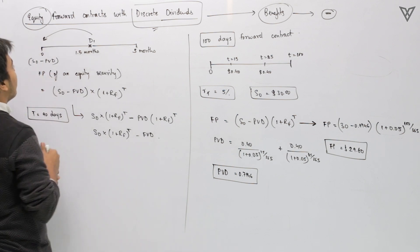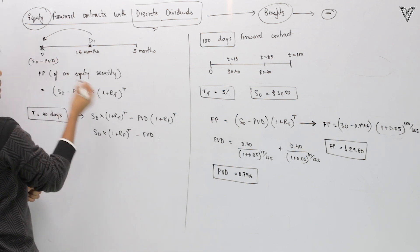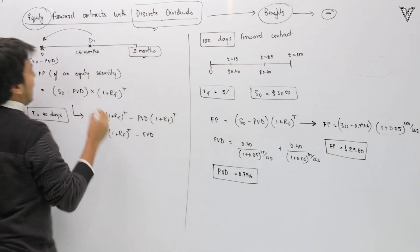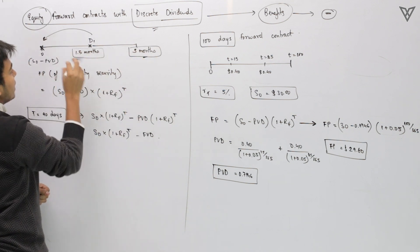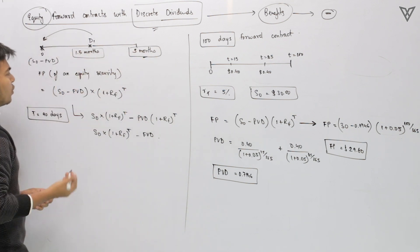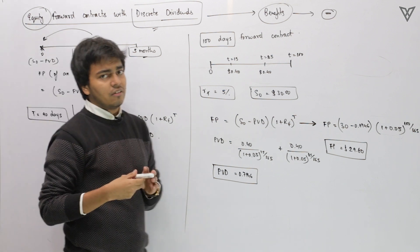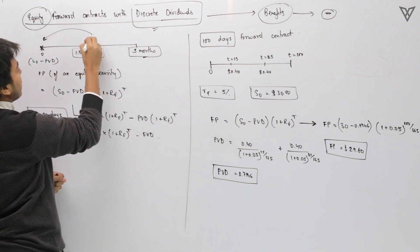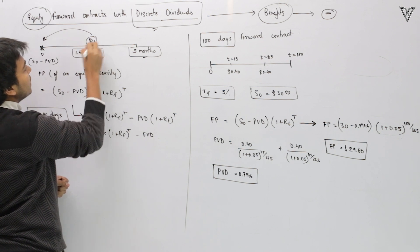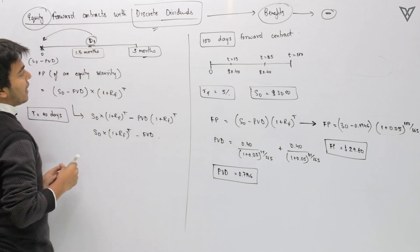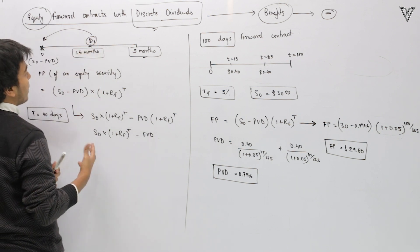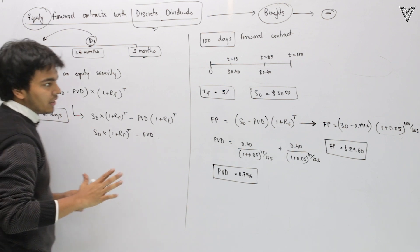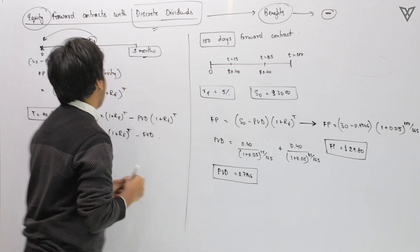Say for example we are looking at a three-month forward contract and there are going to be dividends that investors are going to receive after 1.5 months. This particular dividend is to be subtracted to figure out the forward price, but how exactly that is done is something we will understand.